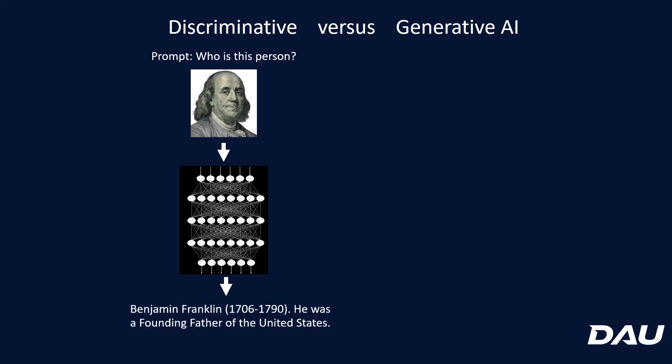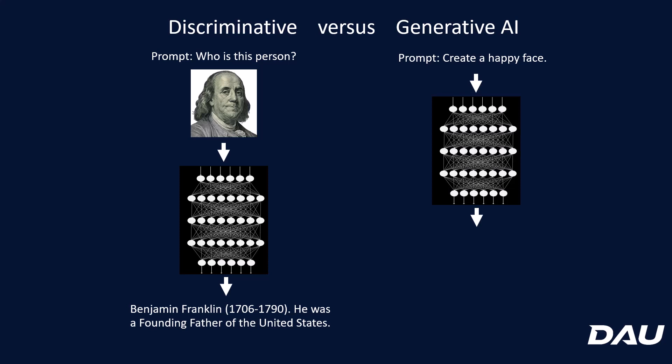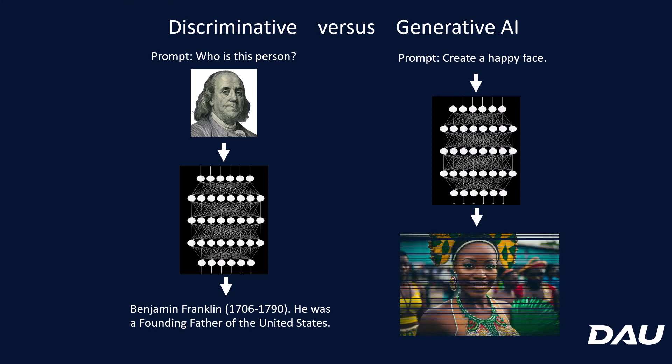That's the discriminative side. Now on the generative side, we say create a happy face. The prompt is a lot easier — on the discriminative side we gave it a whole image as input, but here we just say create a happy face. You give it to the generative network and it creates a happy face, and out pops a happy face.